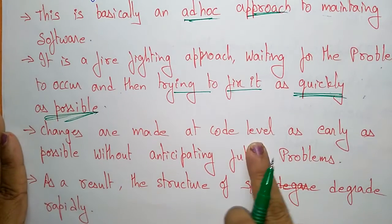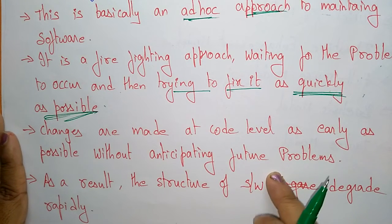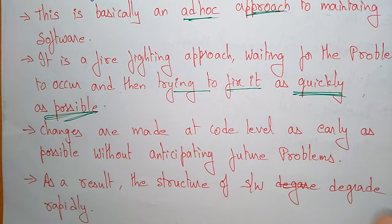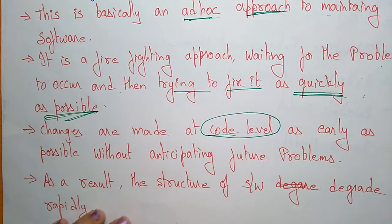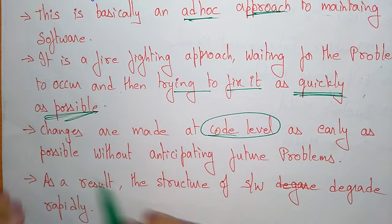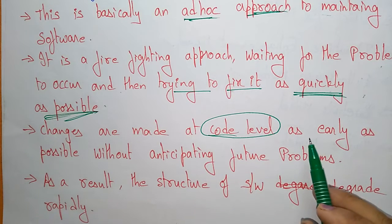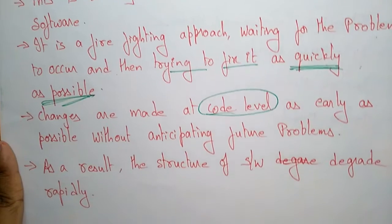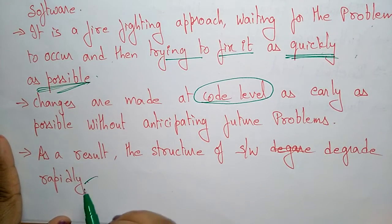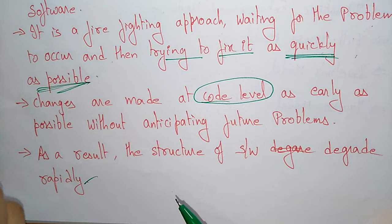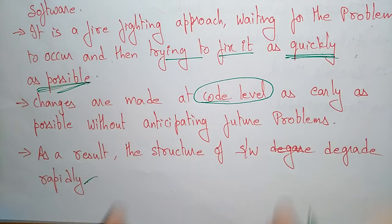Changes are made at the code level as early as possible without anticipating future problems. Try to find out the problem at the code level itself — before going to testing, try to find out the problem. As a result, the structure of the software degrades rapidly, because every time we are checking at the code level and solving it then and there.